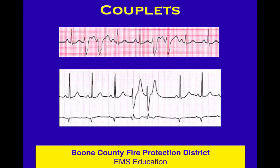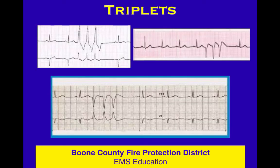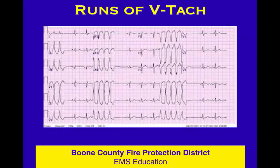This is different — two funky beats in a row: a couplet, two PVCs in a row. And a triplet is three funky beats in a row. There's no such thing as quadruplets — four PVCs in a row is a short run of V-tach.